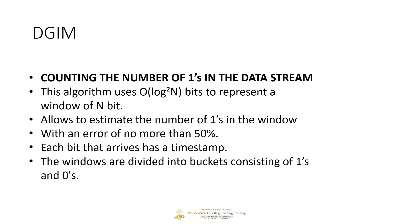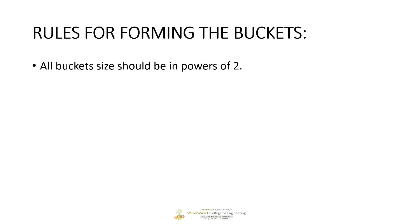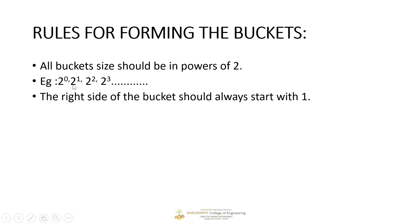There are various rules in DGIM to form buckets. All buckets formed in the DGIM algorithm are of size a power of 2. That means the first bucket will be of size 2 to the power 0, the next bucket of size 2 to the power 1, the next of size 2 to the power 2, and so on. In short, we will have buckets of size 1, 2, 4, and 8. The right side of each bucket should always start with a 1.